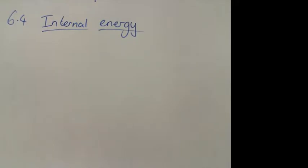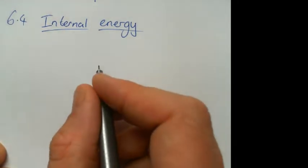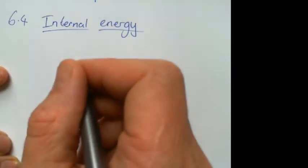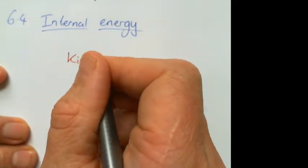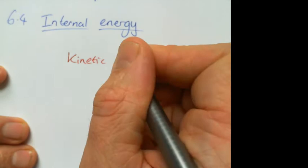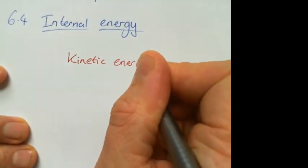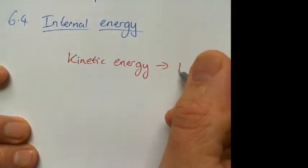And what we can talk about now is we like to split internal energy out into two sections. So when temperature is increasing, the type of energy that's been increased is the kinetic energy. So the kinetic energy of the particles is how fast they're moving.